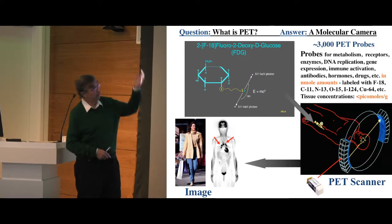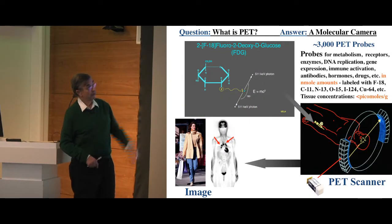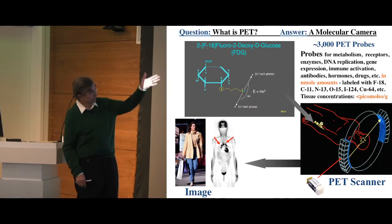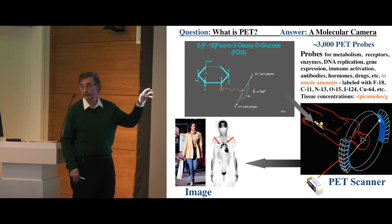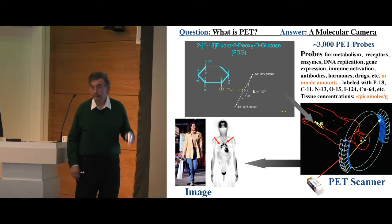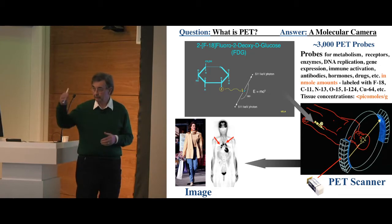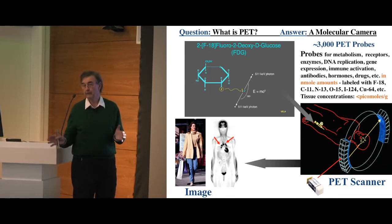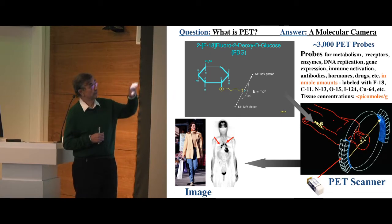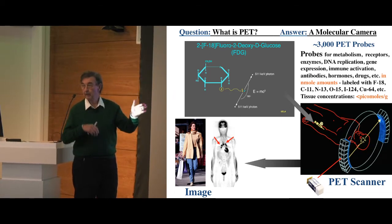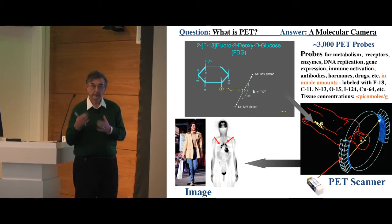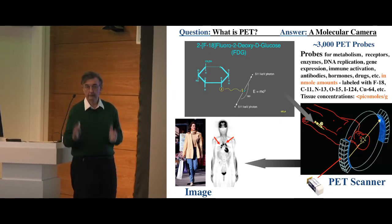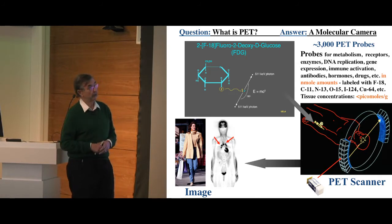So what is PET? It's a molecular camera. We use tracers. We label molecules and do assays. We can do KDs or Bmaxes. We can do enzyme kinetics. We can do many different things because we actually measure the kinetics of the probe over time. It's quantitative throughout all tissues of the body.